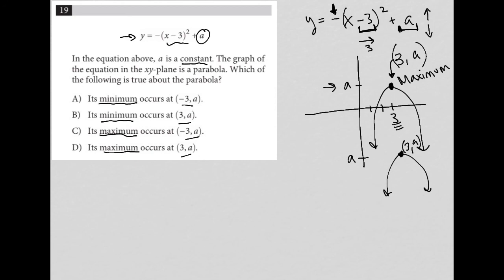So I'm going to cross out answer choices A and B because we're looking at the maximum value, not a minimum value. Choice C says the maximum occurs at negative 3 comma A. That's incorrect. Choice D says the maximum occurs at positive 3 comma A. And that's exactly what we have. So choice D is the correct answer here.